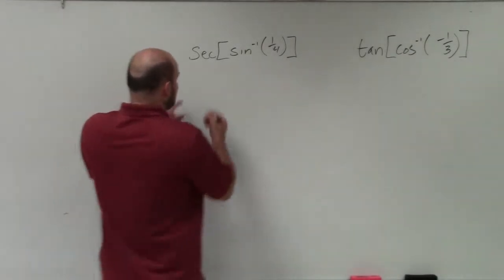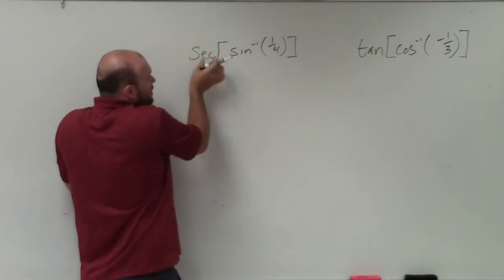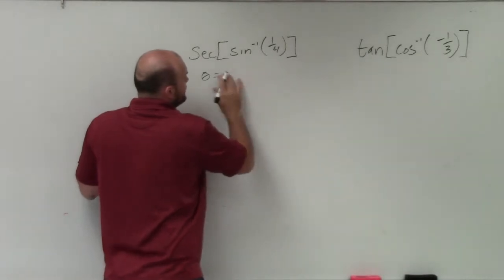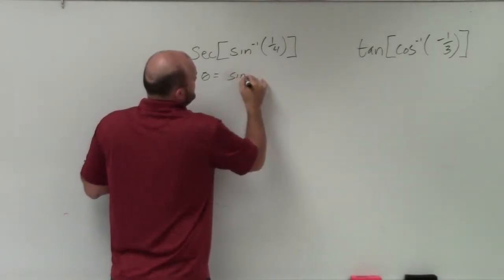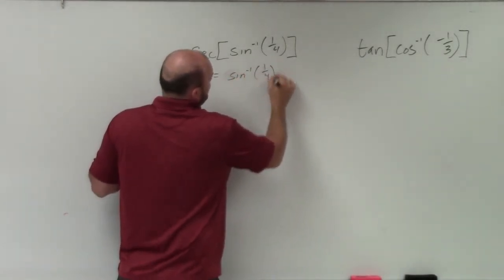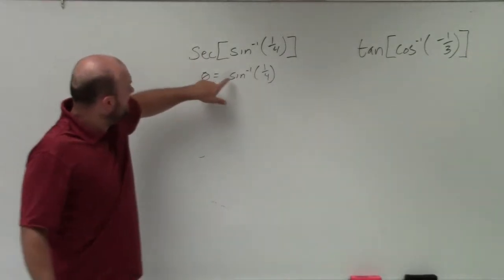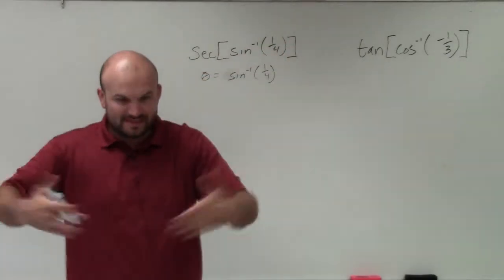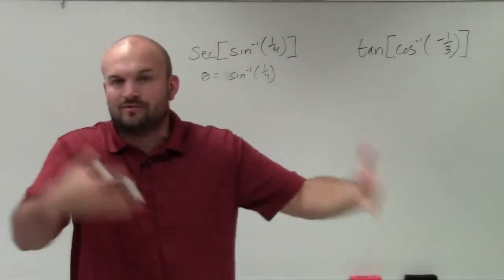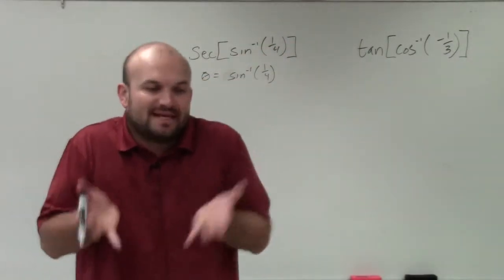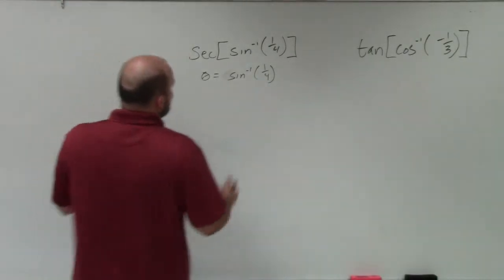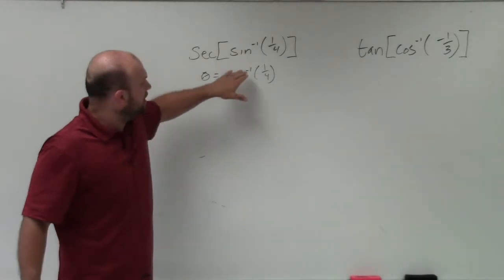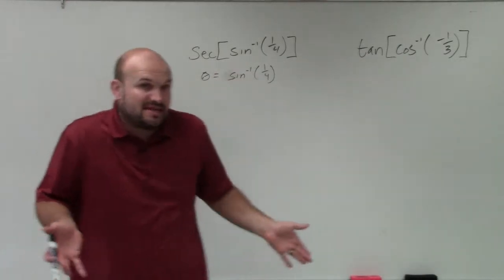Now again, remember, we're trying to evaluate for secant. We only know how to take the secant of an angle. So therefore, theta is equal to sine inverse of 1/4. If we could replace sine inverse of 1/4 with theta, then we could take the secant. You take secants of an angle. The trigonometric functions, we take them of angles. However, when we're taking inverse, what we're trying to do is we're trying to find the angle. So the inverse sine of 1/4 is going to produce us an angle.